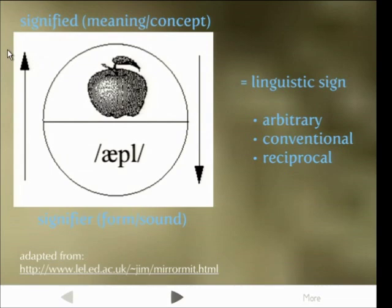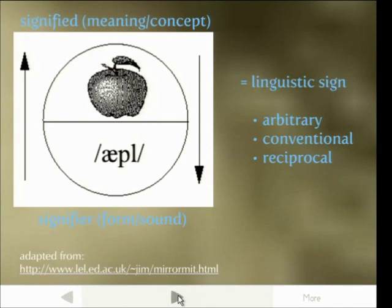It's important to keep in mind this linguistic sign because it's such an important phenomenon. The concept bit is called the 'signified' and the form/sound bit is called the 'signifier'. So in linguistics you will often hear that the signifier and signified — i.e., form and meaning — have an arbitrary relationship, because different languages use different forms.